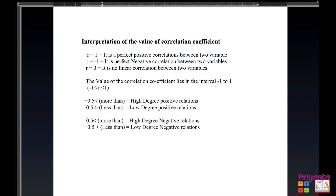Remember, the value of the correlation coefficient r lies in the interval of minus one to one, so your answer should always have a zero point something — it can carry a plus or minus sign but will remain with a decimal. If it is more than 0.5, it is called a high degree positive relation. Less than 0.5 is a low degree positive relation. Similarly, minus more than 0.5 is high degree negative, and less than 0.5 in magnitude is low degree negative relation.